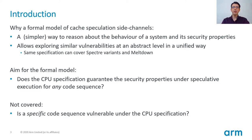From the Wikipedia definition, a side channel attack is an attack that gains information from the actual hardware implementation rather than relying on a weakness in the algorithm itself. For example, in the cache side channels case, the attacker can probe the content of the cache by timing the access to certain memory locations. With cache speculation side channels, the attacker uses the imprint left in the cache via instructions executed speculatively in the victim.